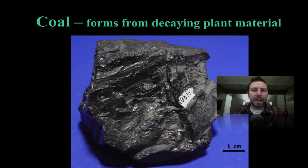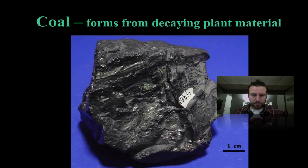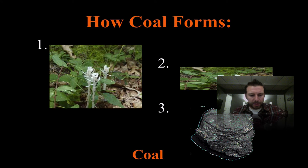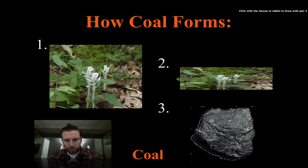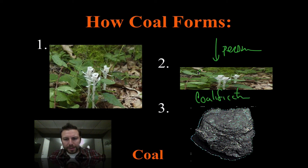Coal forms from decaying plant material. Plant material accumulates, piling up on top of each other, and ultimately a lot of pressure forces a process called coalification to eventually form coal. Those plant remains accumulate, we apply pressure, and through coalification — the process that breaks down carbon chains to produce hydrocarbons — coal is formed.